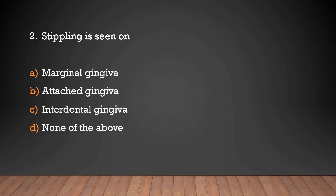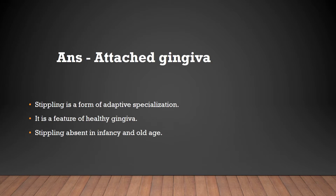Stippling is seen on: marginal gingiva, attached gingiva, interdental gingiva, or none of the above? The answer is attached gingiva. Stippling is a form of adaptive specialization. It is a feature of healthy gingiva and it is absent in infancy and old age.